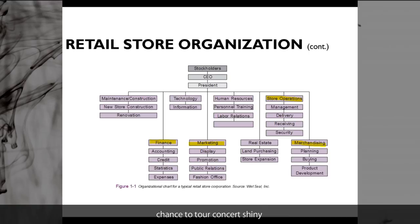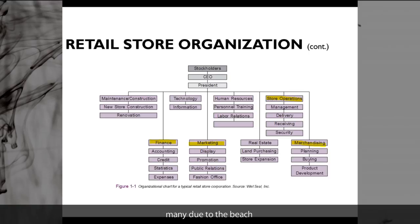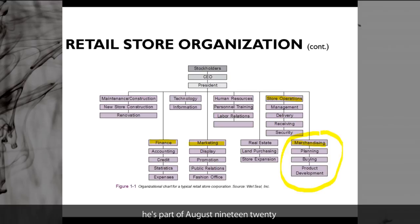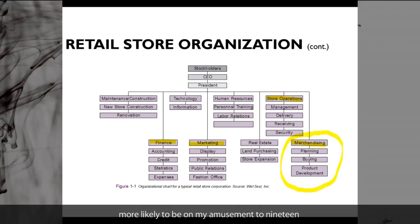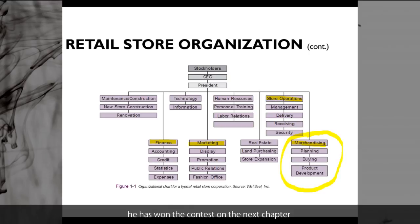They have more departments such as store construction, maintenance, technology, human resources — meaning how you hire people and manage labor relations — and also real estate related functions such as land purchasing, store expansion, as part of the retail store organization. But we're going to mainly talk about merchandising: planning, buying, and product development. We'll talk more about retail math details from the next chapter.